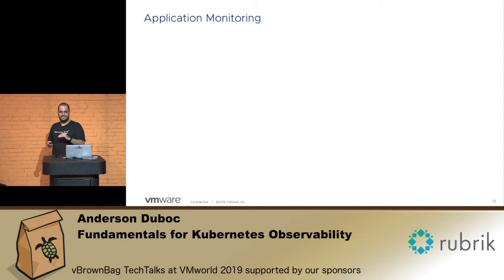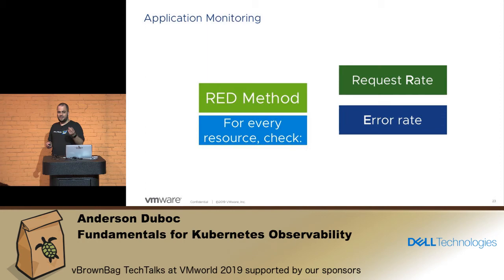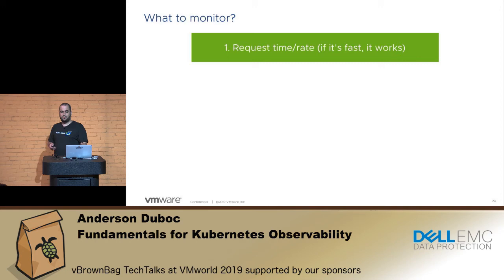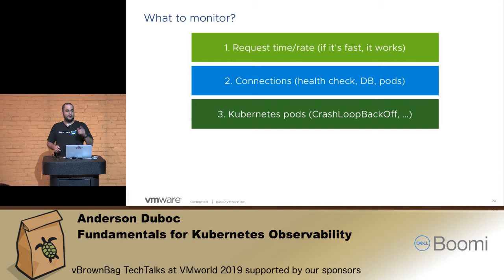If I'm doing application monitoring, I use the RED method. What is that? For every service, check: request rate, error rate, and request duration. And that's when you introduce something like a service level objective. Watch and monitor request time and rate — if it is fast, it works, but you have to keep monitoring that. Also connections, health checks, database, and Kubernetes pods.